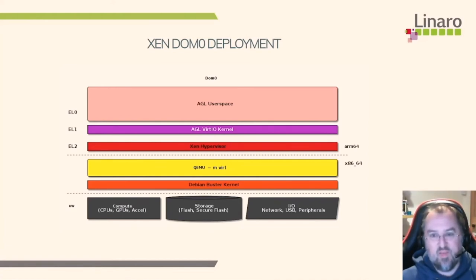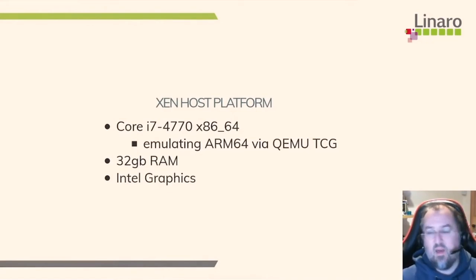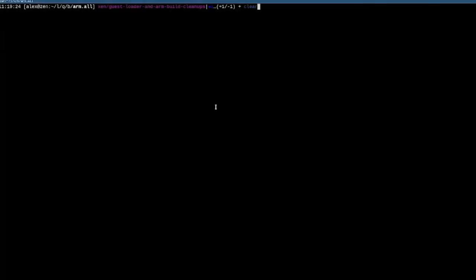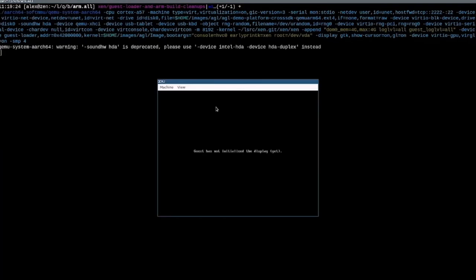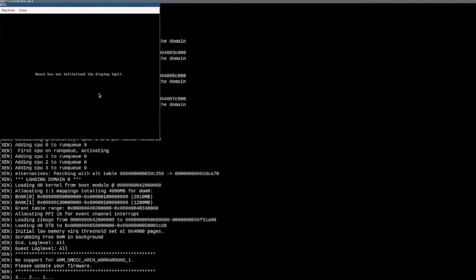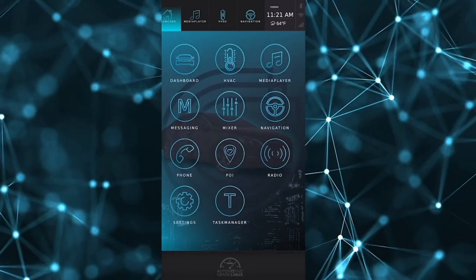The host platform is a Core i7 x86-64 machine emulating ARM64, so it runs a little bit slower, with 32GB of RAM and Intel graphics instead of NVIDIA. You can see that's the Xen hypervisor as it detects the hardware and loads the guest kernel into position. We'll click the same button as before — it takes a little bit longer for the actual software to run, but as you can see the graphics respond pretty quickly.